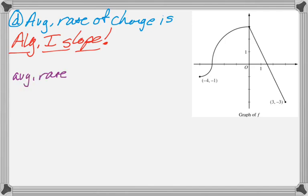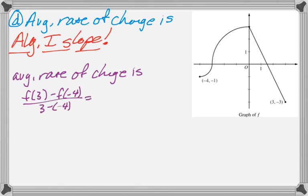So the average rate of change of f on the interval from negative 4 to 3 is f of 3 minus f of negative 4 over 3 minus negative 4. And you can just read those values off of the figure. So that's negative 3 minus negative 1 over 7, which gives us negative 2 over 7.